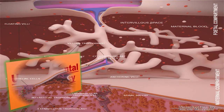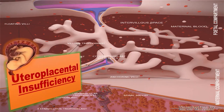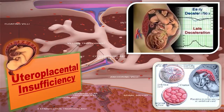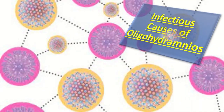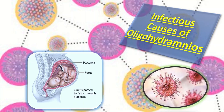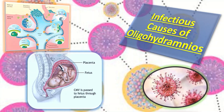Uteroplacental insufficiency results in decreased amniotic fluid volume because it causes blood flow to redistribute to the fetal brain rather than the abdomen and kidneys, causing poor urine output. Congenital viral infections like CMV cause oligohydramnios primarily through microbial invasion of the amniotic fluid and fetal inflammatory response syndrome, which redistributes blood flow away from the fetal kidneys, resulting in decreased fetal urinary output.